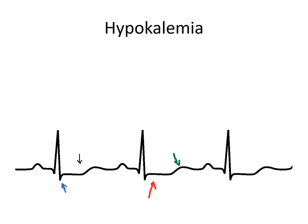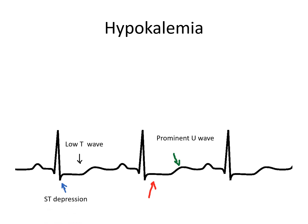Hypokalemia on ECG can result in flattened or inverted T waves, U waves, ST segment depression, and prolonged QT interval.